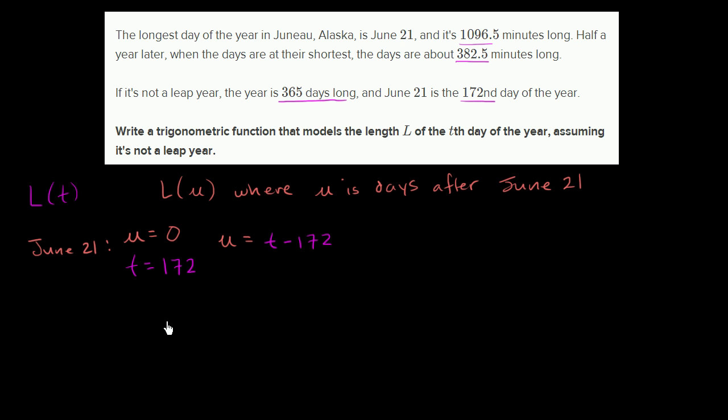So first of all, what's happening when U is equal to 0? U equals 0 is June 21st, and that's the maximum point. So what trig function hits its maximum point when the input is 0? Well, sine of 0 is 0, while cosine of 0 is 1. Cosine hits its maximum point, so it seems easier to model this with a cosine.